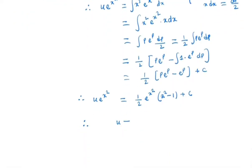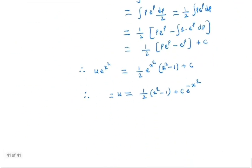So u is equal to 1/2 (x² - 1) + c e^(-x²). And what is u? u is nothing but tan y.